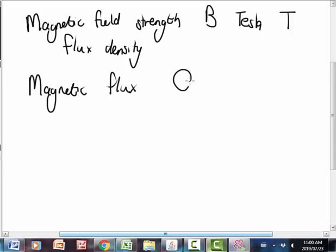The symbol for magnetic flux looks like this. The unit is Weber and the abbreviation is WB. We can say that magnetic flux is equal to the product of the perpendicular component of the magnetic field strength and the area.